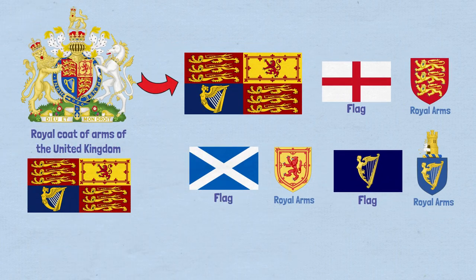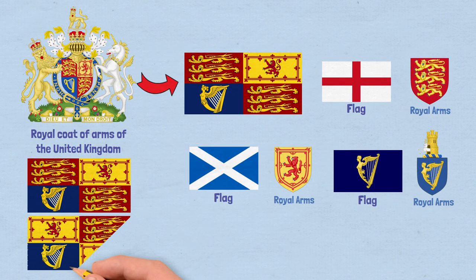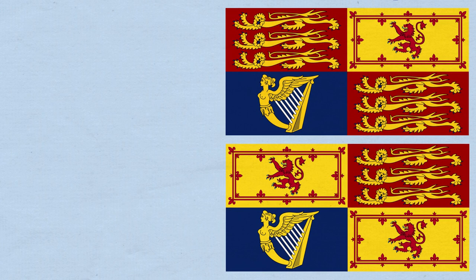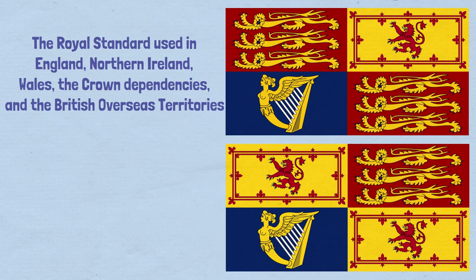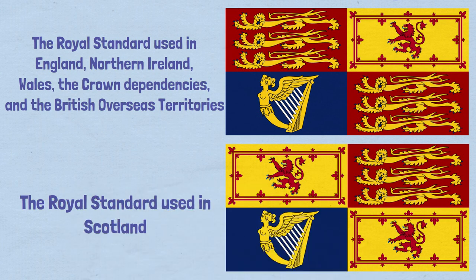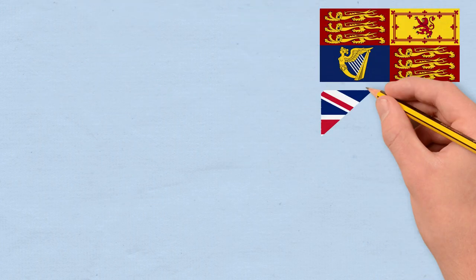What is really interesting is that there are two versions of this flag — the one that is used in England and pretty much anywhere else, and this one, which is meant to be used within Scotland, which of course replaces one of the English quadrants with another Scottish one.